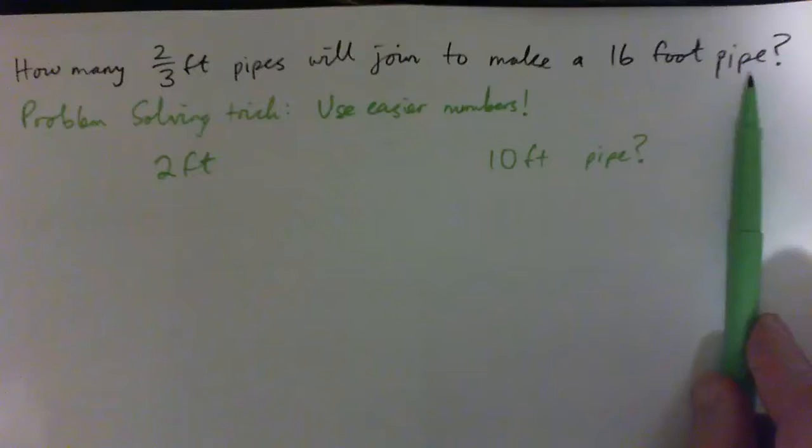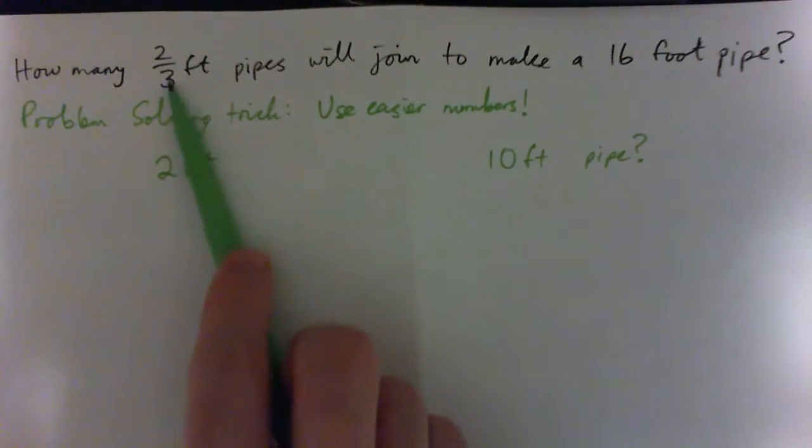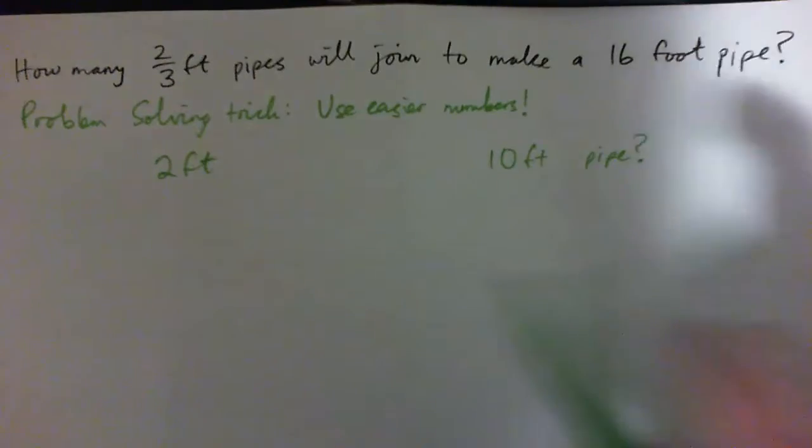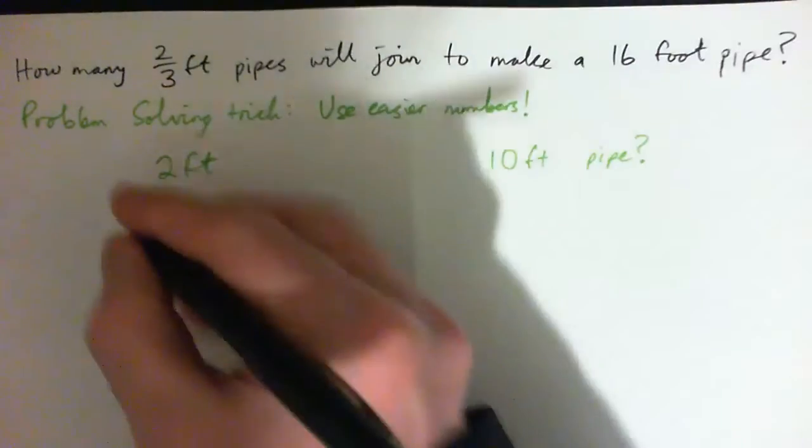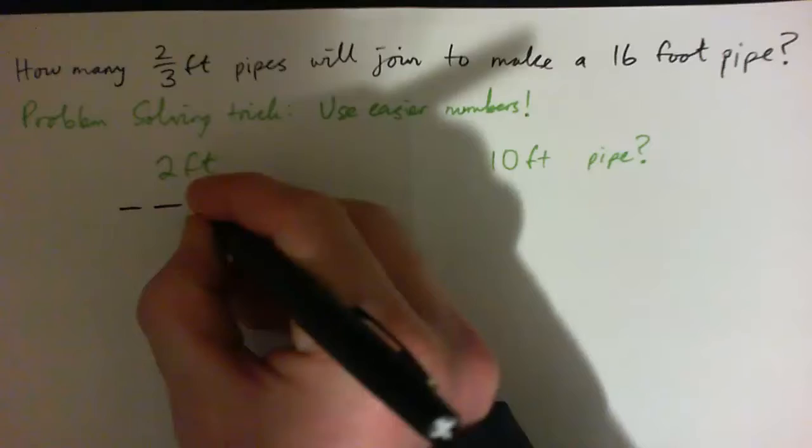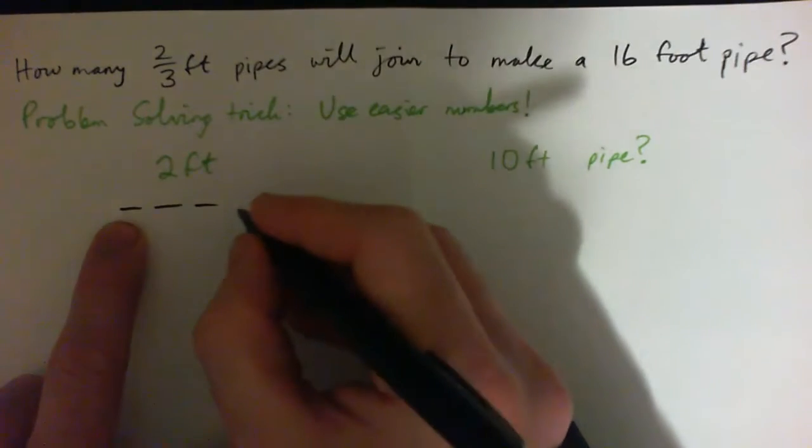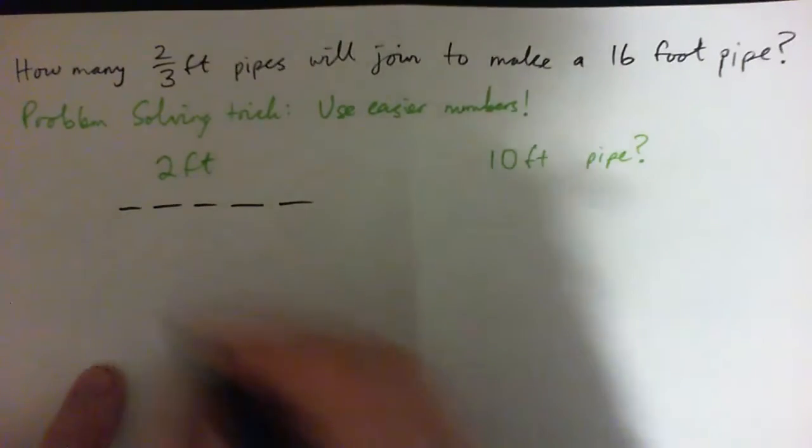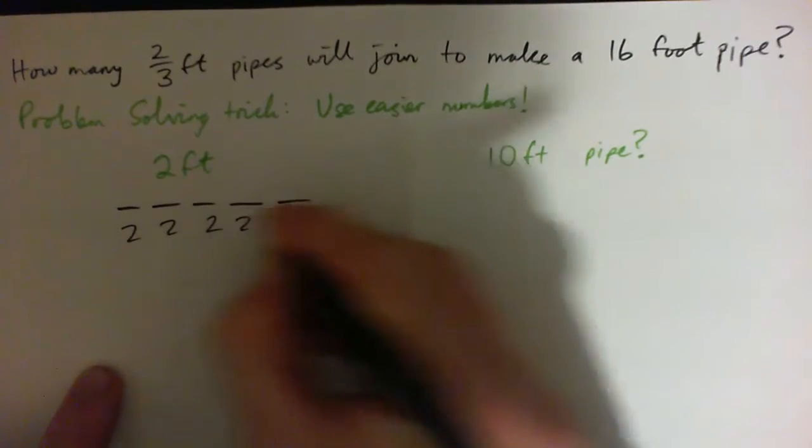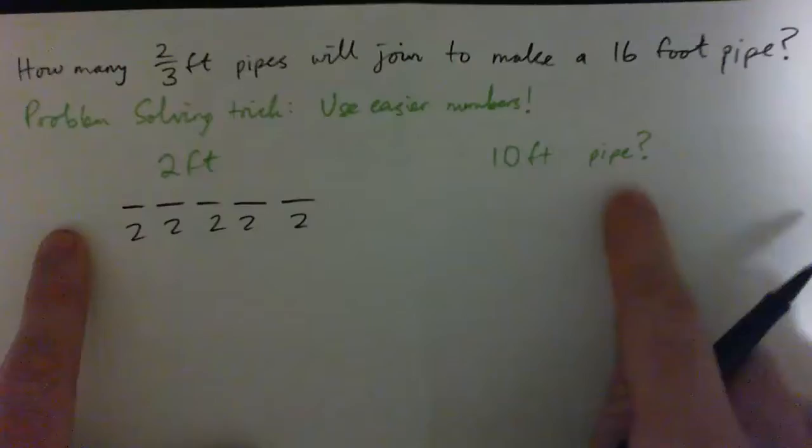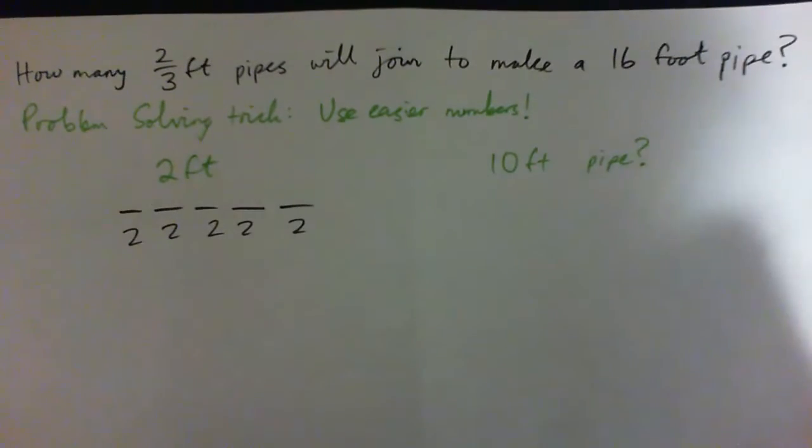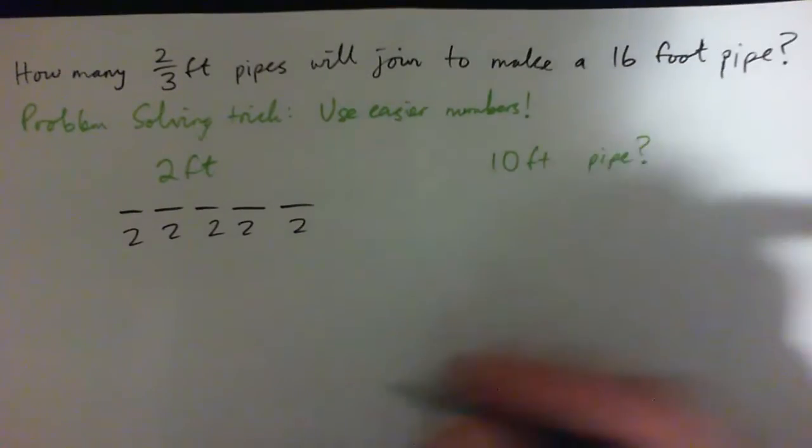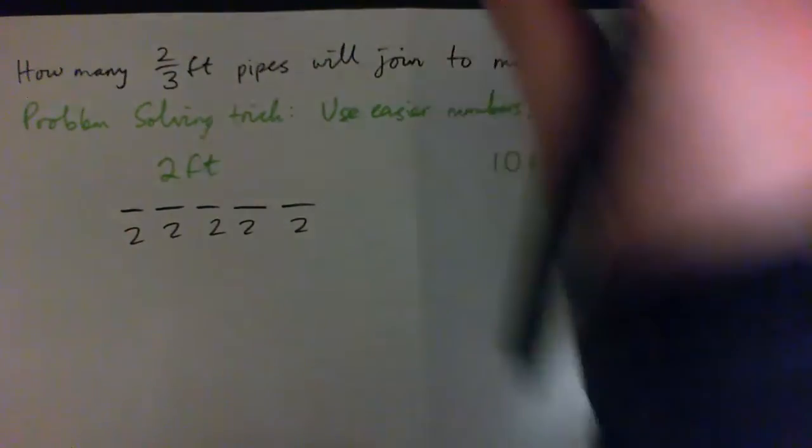So how many two-foot pipes will join together to make a 10-foot pipe? Just to visualize that: this is one, two. These are two-foot pipes. So one, two, three, four, five of them will work, won't it? Five two-foot pipes will make a 10-foot pipe if you put them all together. How do we get that? How do we get the answer of five?